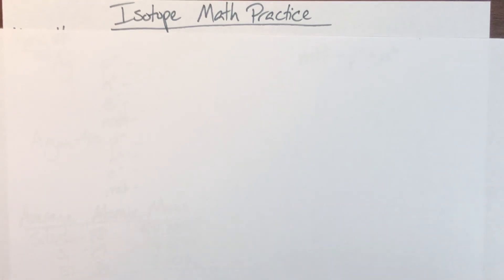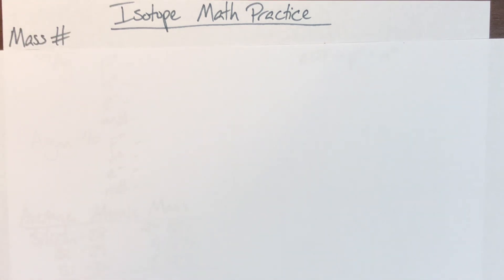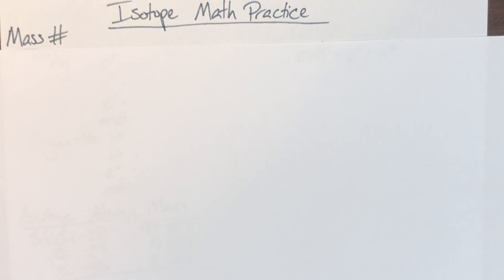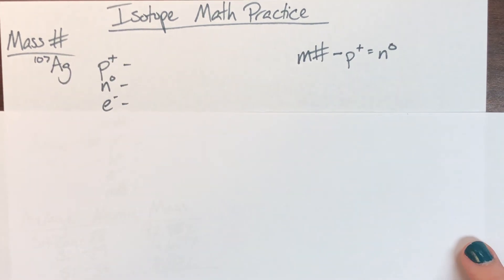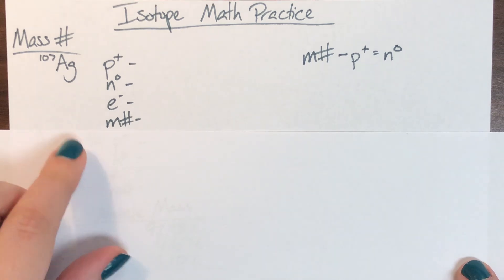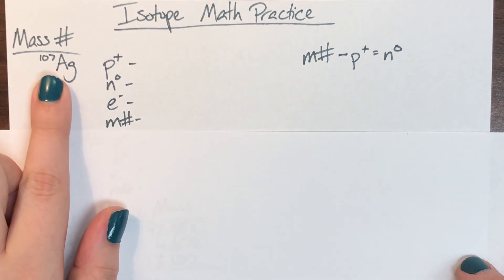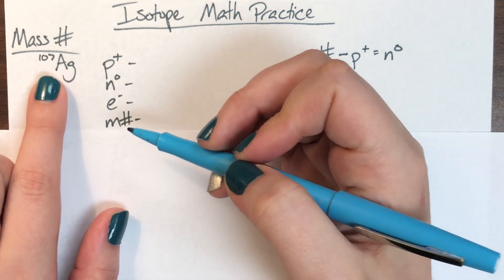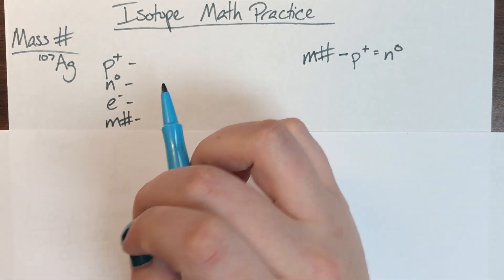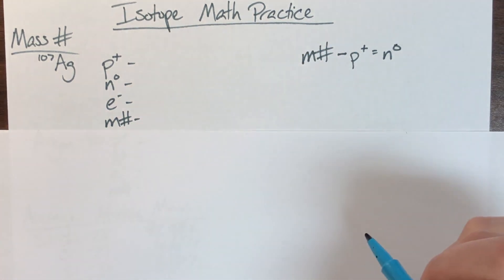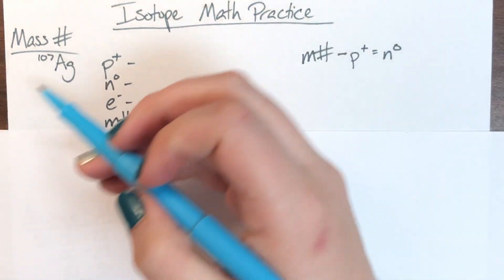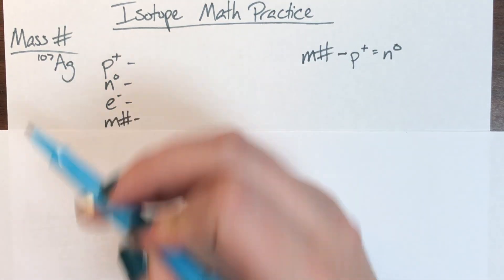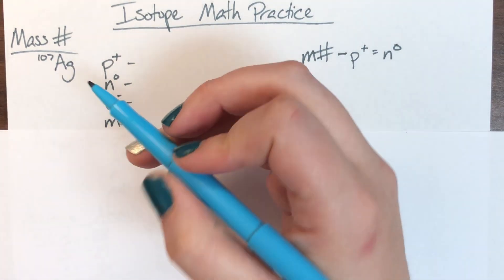Today we're going to be doing some isotope math practice. The first thing we're going to focus on is how to find the mass number and what that even means. Our very first example is going to be silver with a mass of 107 — so silver-107 is our isotope. We need to identify some things here because I don't actually have a proton count given.